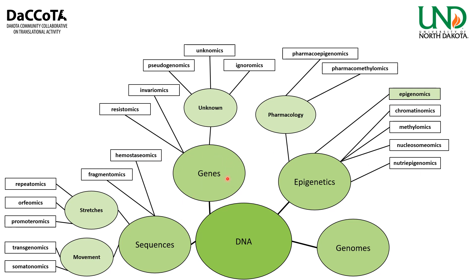Under genes: resistomics is an important subfield covering antibiotic resistance genes. Invariomics covers genes that don't change expression from one condition to another. Then there's an 'unknown' category: pseudogenomics (study of pseudogenes), anonomics (genes with no functional information), and ignoromics (uncharacterized genes) — these probably all refer to the same thing.